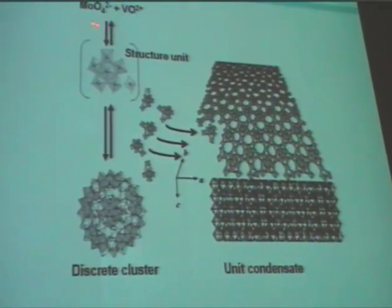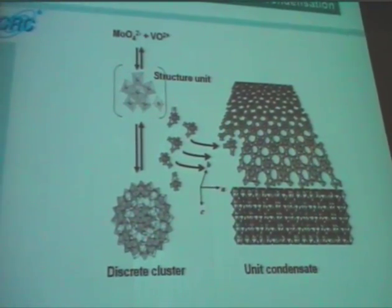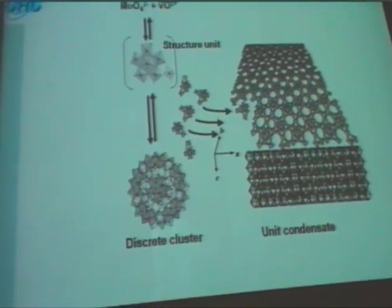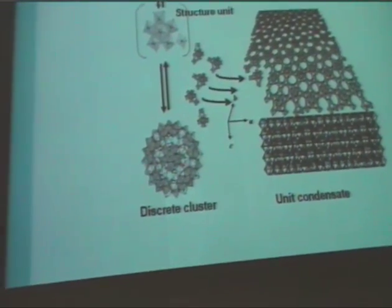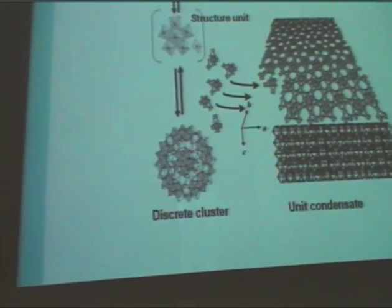The initial material is something like this. The material forms by selecting the pH conditions, which give you some specific units in solution. And it is quite a rational, reasonable approach.